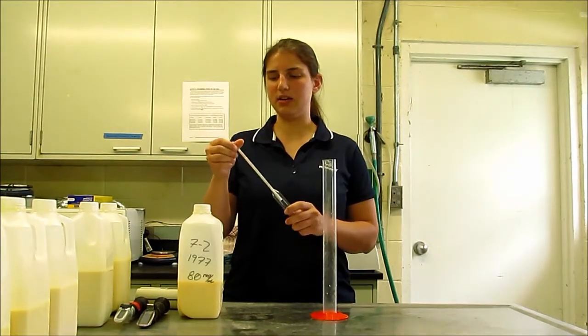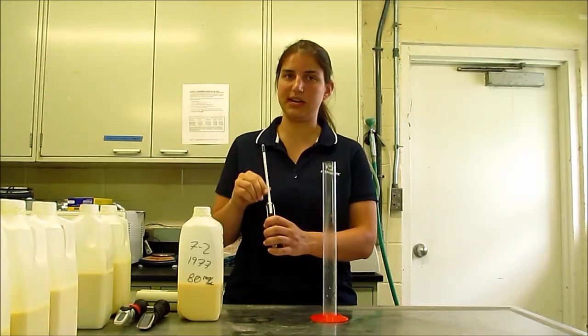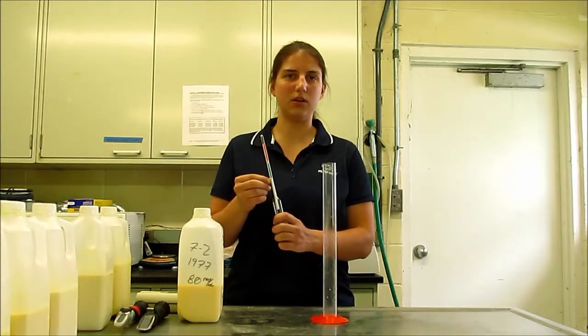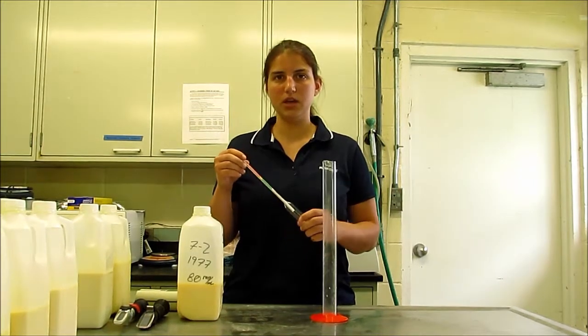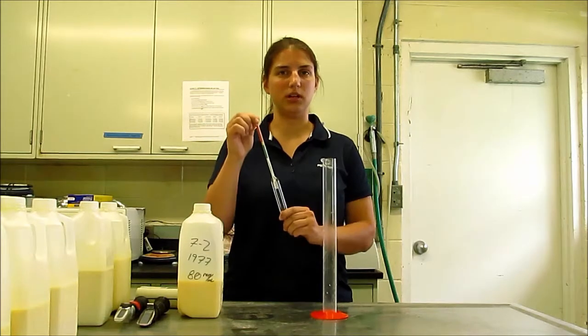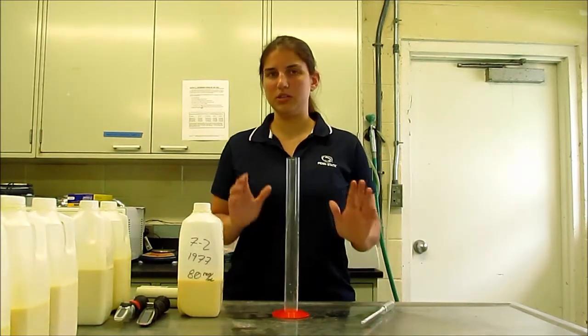It has a scale on it that will relate the colostrum density to the IgG concentration and give you an exact value. It also has a color-coordinated scale, with the green being high-quality colostrum and the red being poor-quality colostrum. These come in multiple different models, but all of them will come with a colostrometer and a cylinder for measuring the colostrum quality.